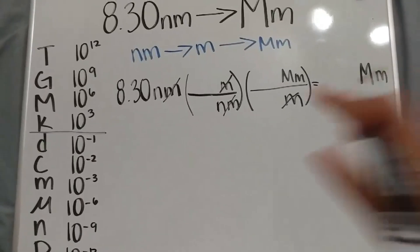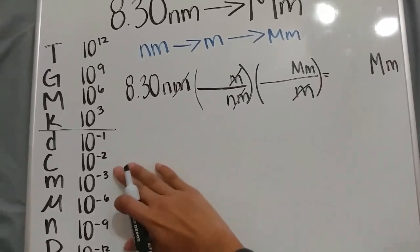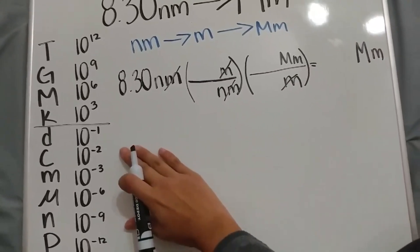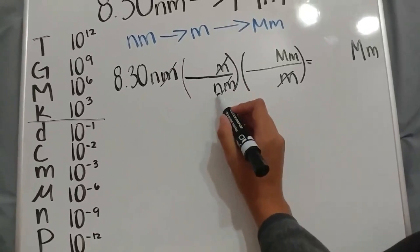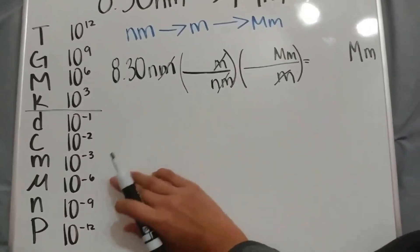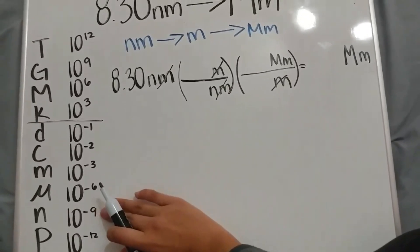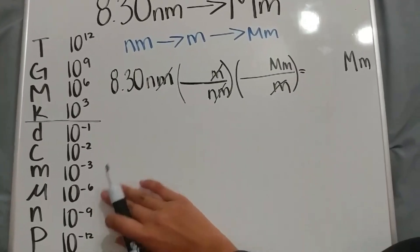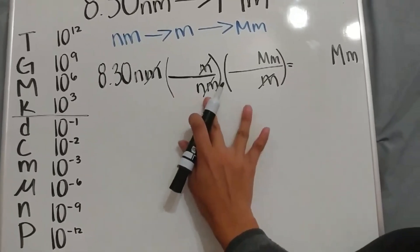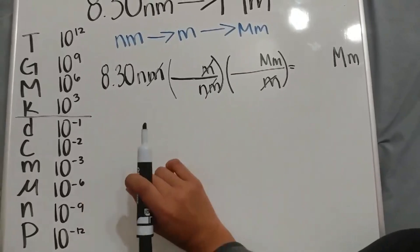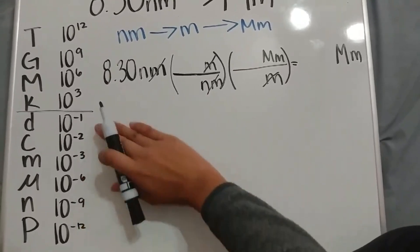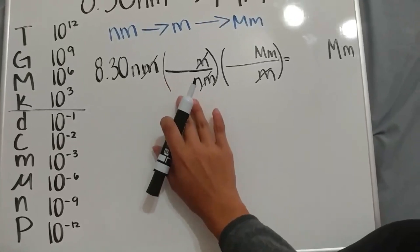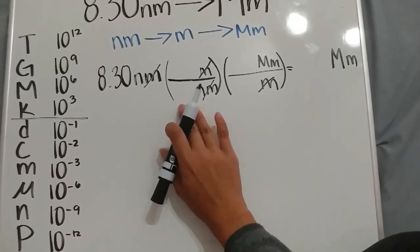So now we put in our units based from the unit prefixes chart. As you can see here, we have the prefix nano, which is n, and n is 10 to the negative 9. However, when you put in these scientific notations within the conversions, the exponent is always positive, regardless of what it is on the chart.